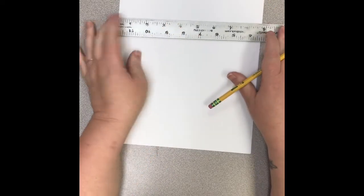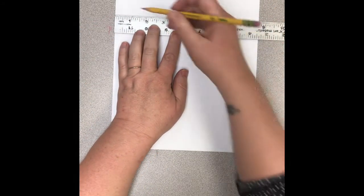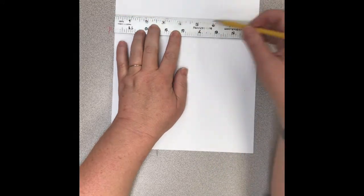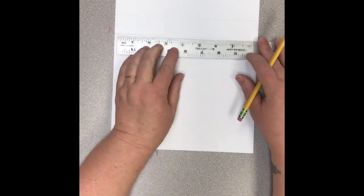Here I'm just using a straight edge, a ruler. If you don't have a ruler you can use anything that has a straight edge to it. You want to draw a nice straight line for the top and bottom of where your letters are going to go.